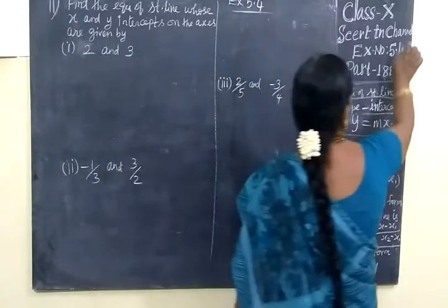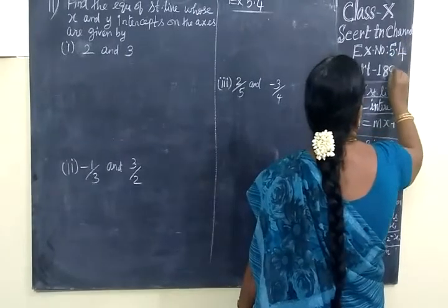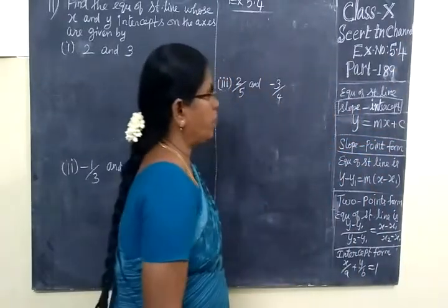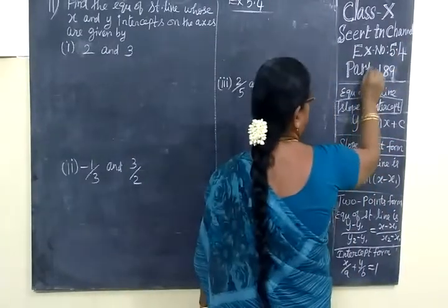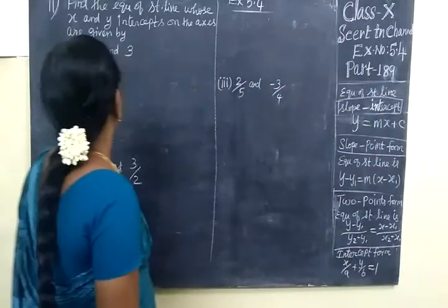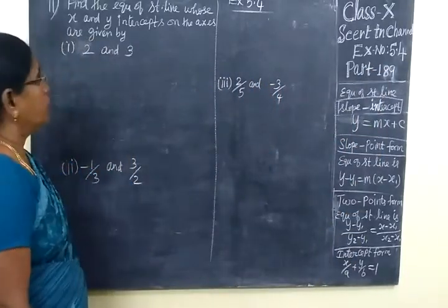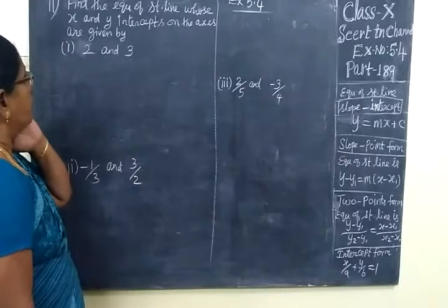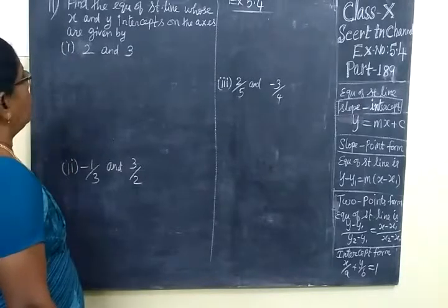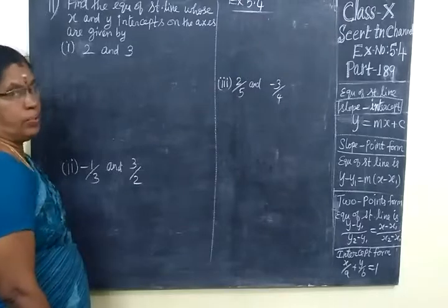Dear students, next we are going to see problem 189, part 1 of exercise 5.4. We are seeing 11th standard. Find the equation of straight line whose X and Y intercepts on the axes are given by: